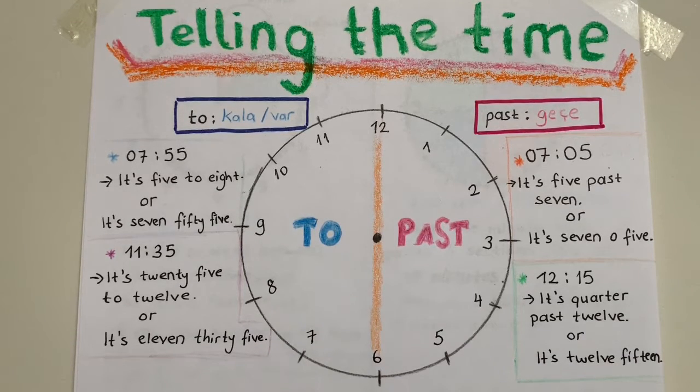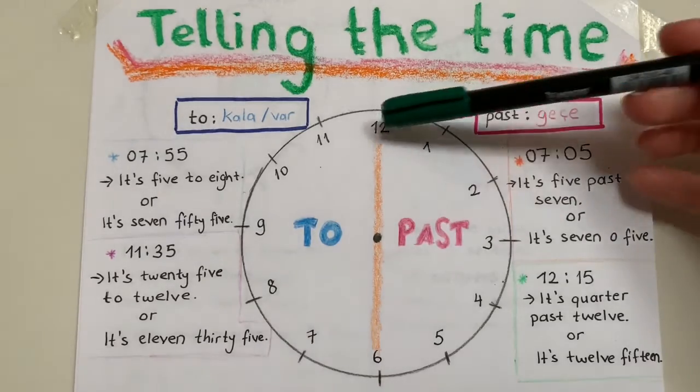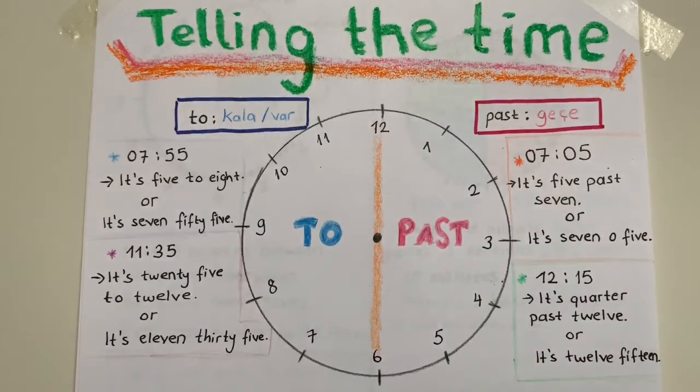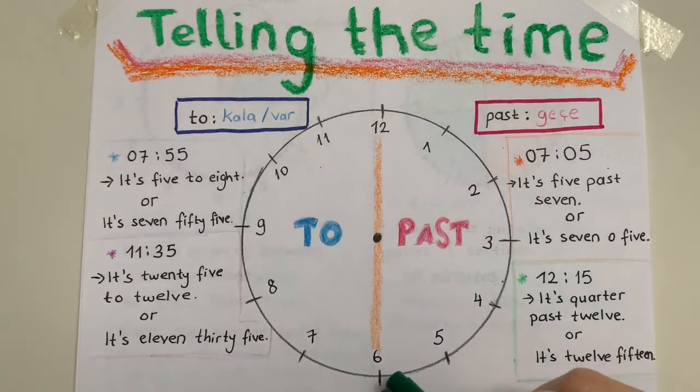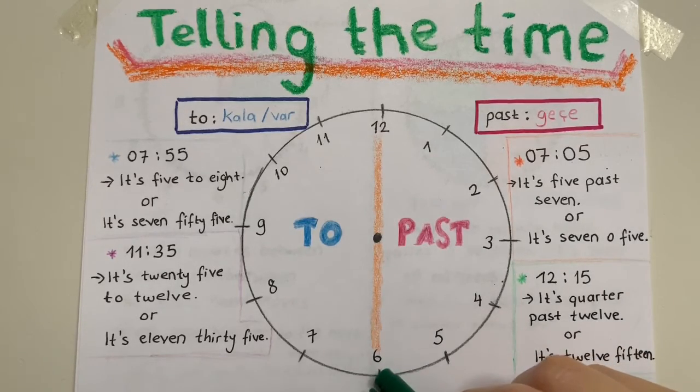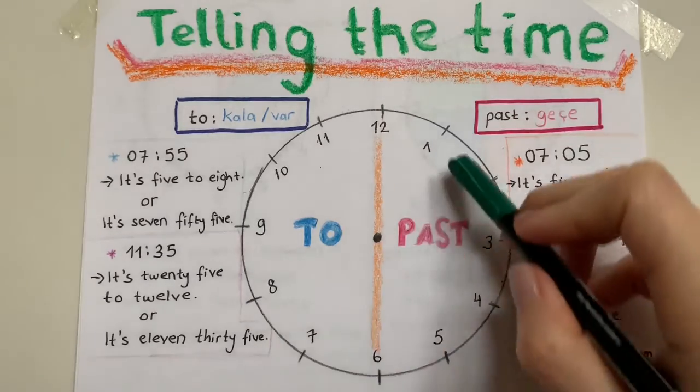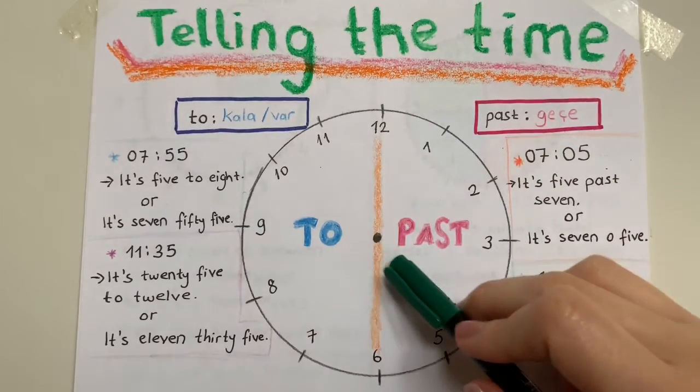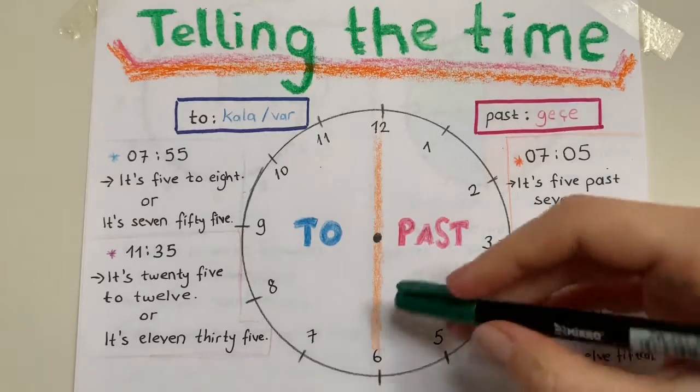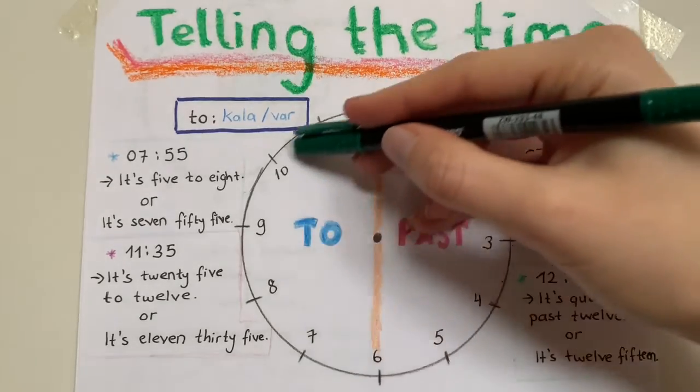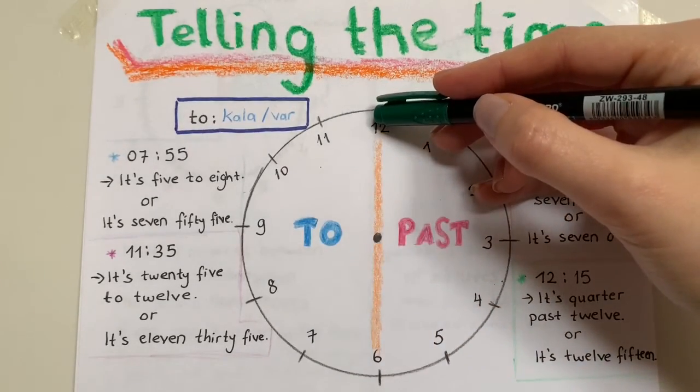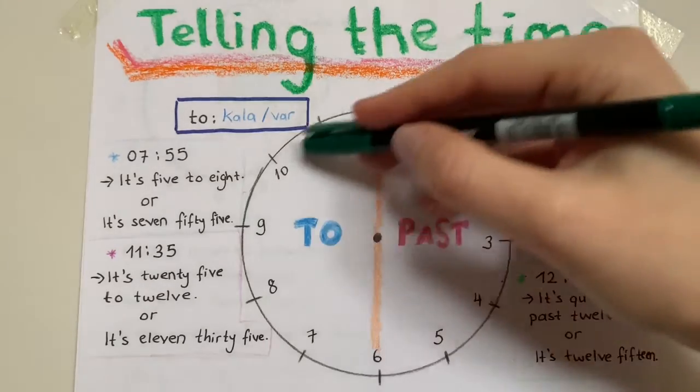Okay, now let's learn how to tell the time. When you look at the clock, if it is before half, between twelve to six, this side is past. If it goes like this way until twelve, from six to twelve,